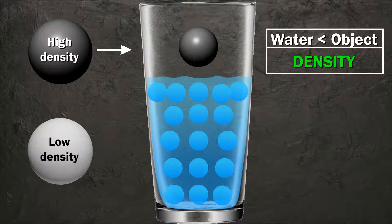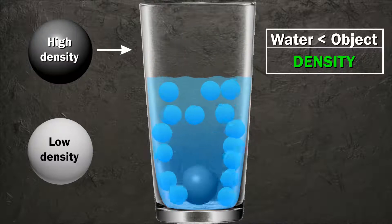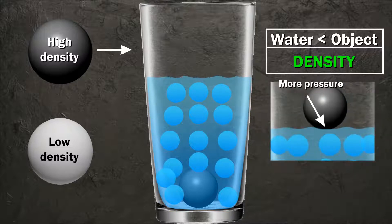When you dip an object with density higher than water, it sinks in because there is more pressure at the base of the object compared to the region at the same level under water.